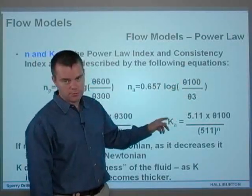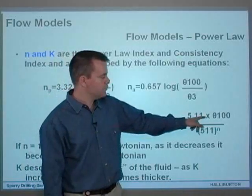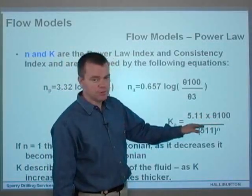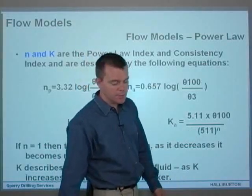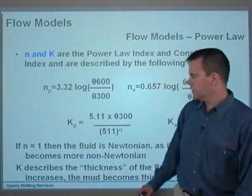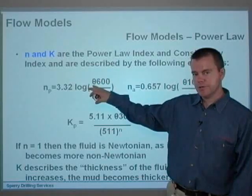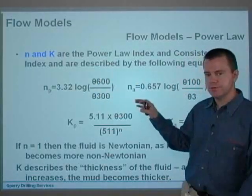And K_a, or K in the annulus, is 5.11 times θ100 divided by 511 to the power of n. Now, you can see that we're using the higher shear rates for the pipe and the lower shear rates for the annulus. And that's fine.